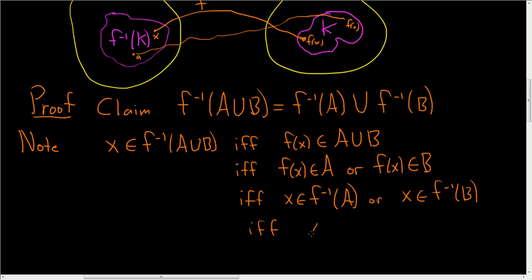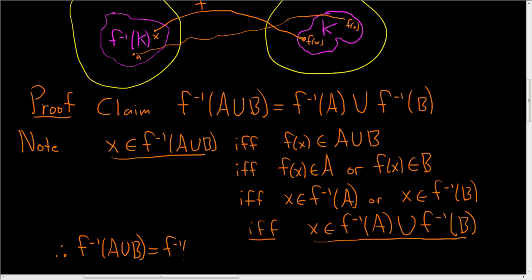And what does this mean? Again, this means X is in the union of the inverse image of A union with the inverse image of B. So we said that X is in this set if and only if X is in this set. So these sets must be exactly the same. So therefore, the inverse image of A union B under our function F is the inverse image of A union with the inverse image of B.